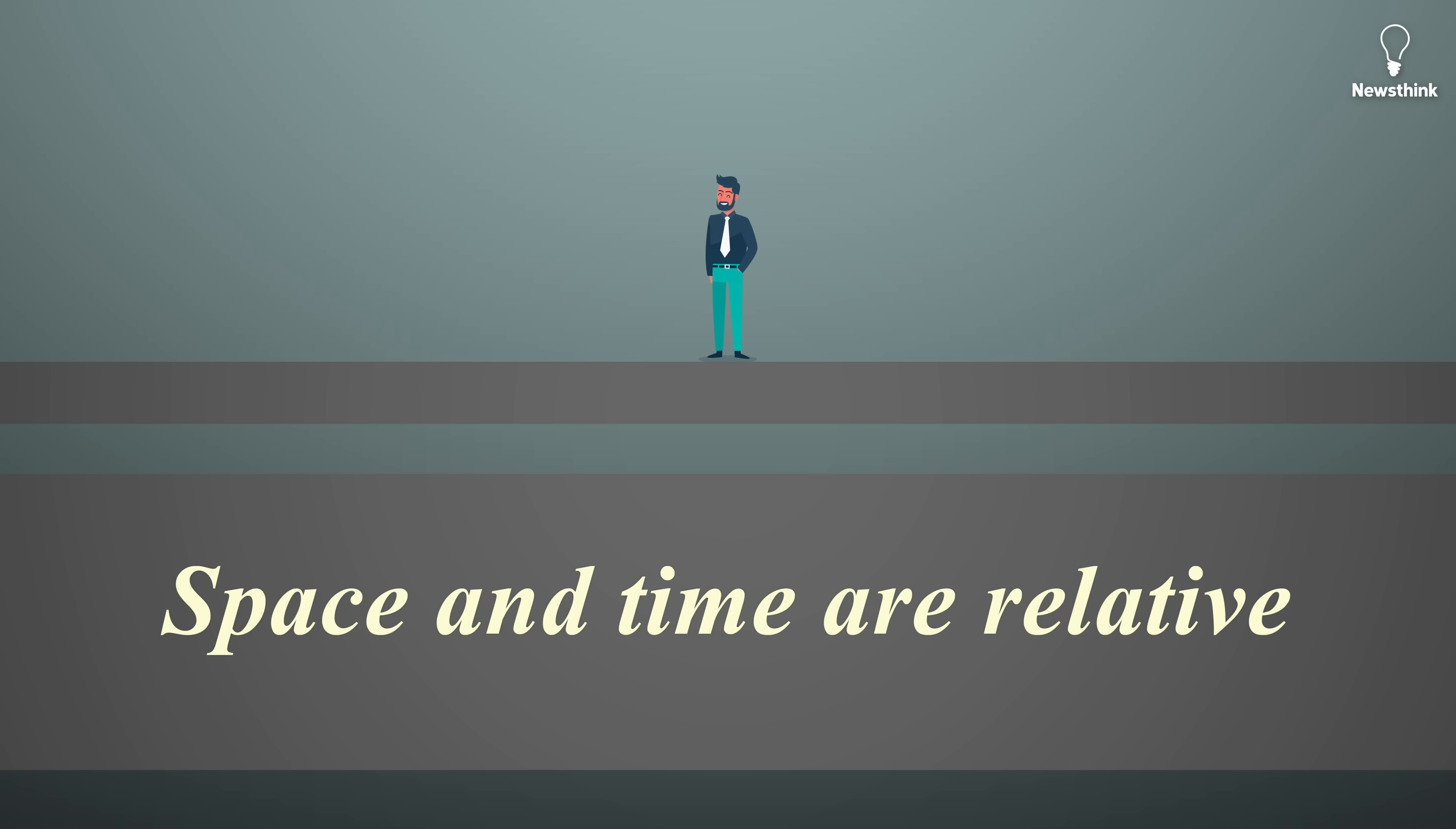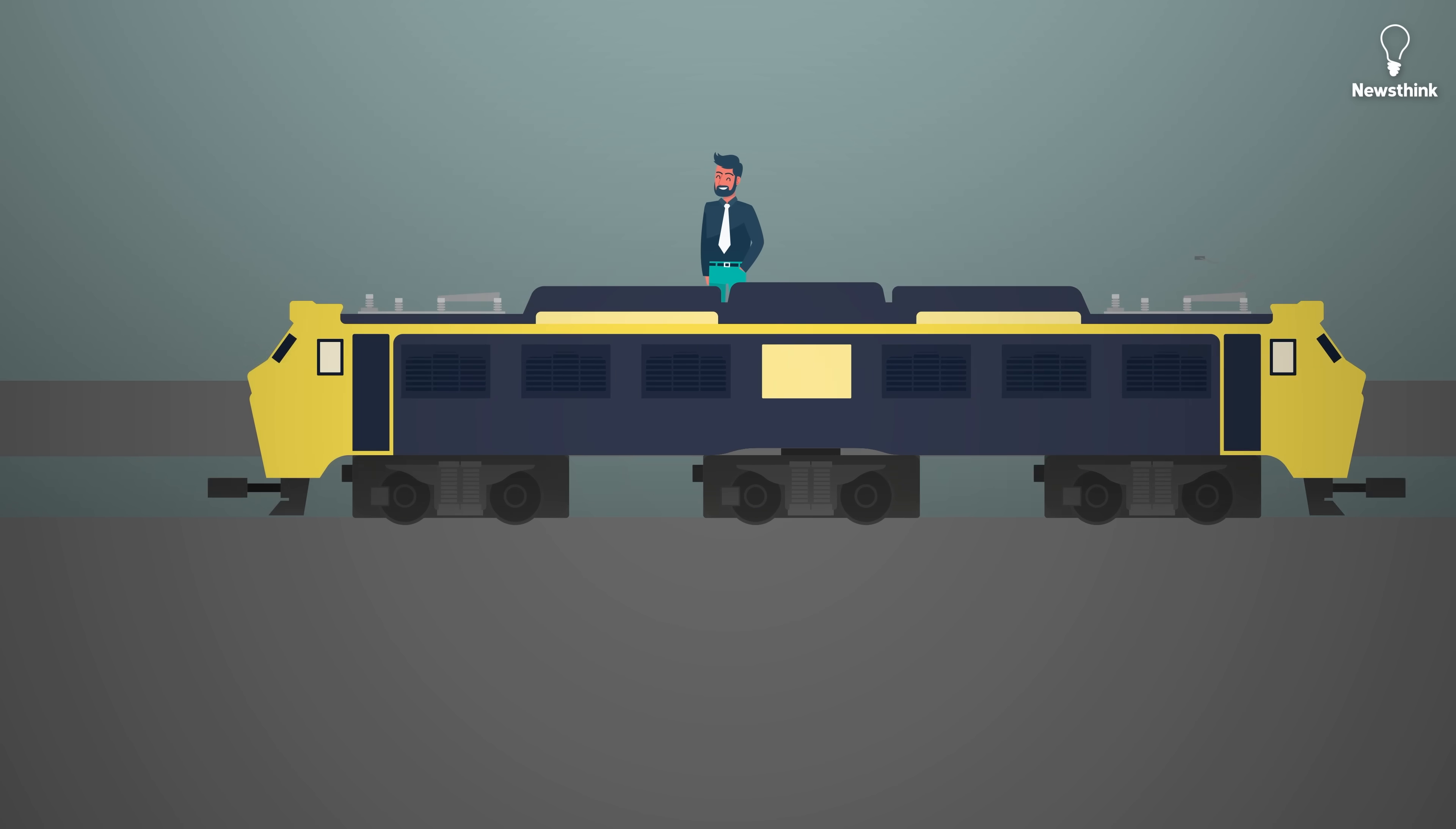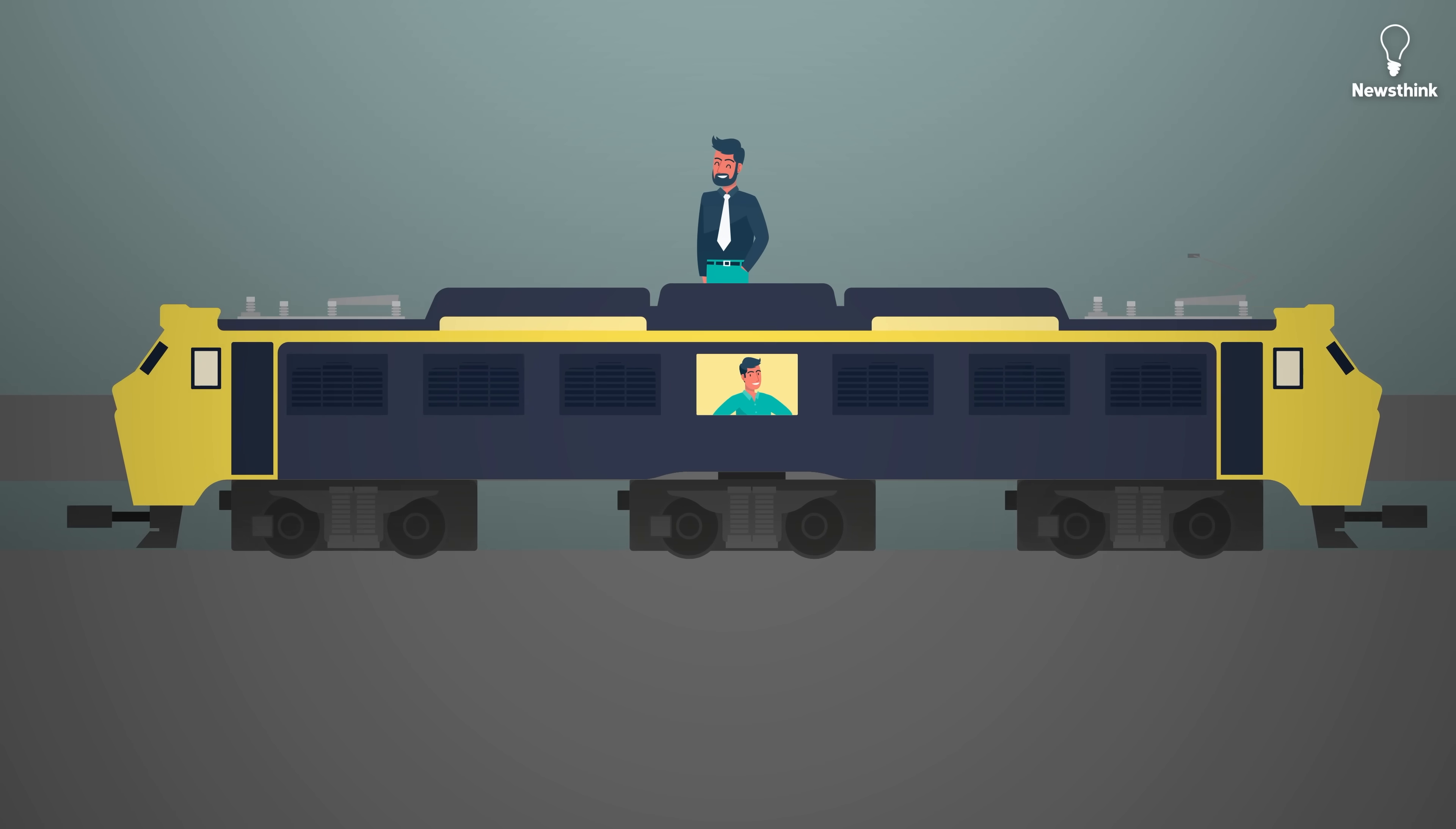For example, in a scenario where lightning strikes both ends of the moving train, a person standing in the middle of the platform sees both strikes simultaneously. But for the passenger inside the moving train, they see the flash at the front first, since the train is moving toward it.